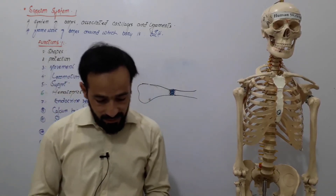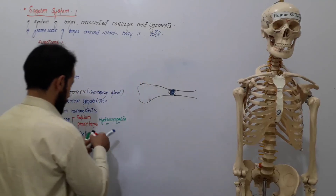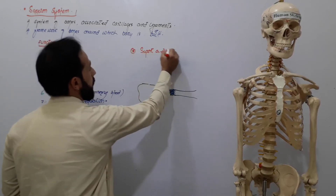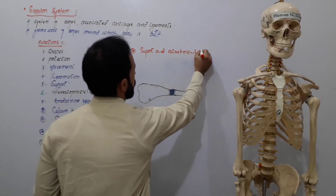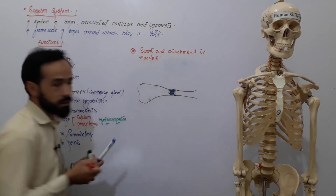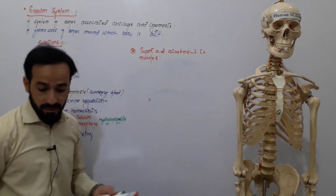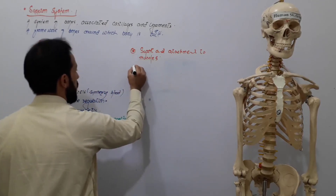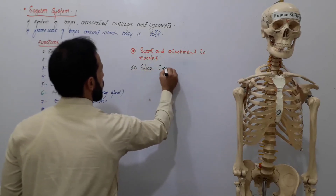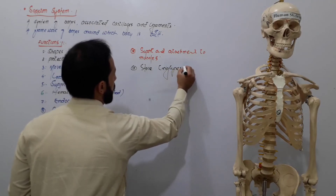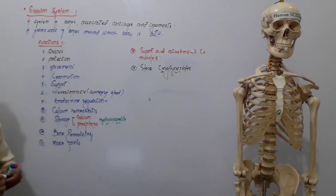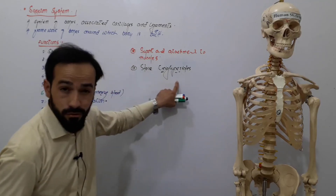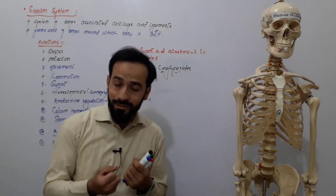The skeletal system also provides support and attachment to muscles. It plays a very important role in giving muscles their attachment points. Additionally, the skeletal system stores triglycerides — fats — inside the bone marrow, making the bone marrow a storage site for triglycerides.